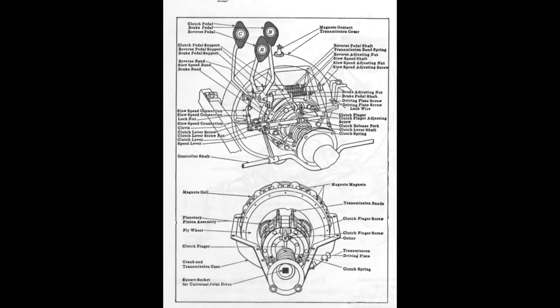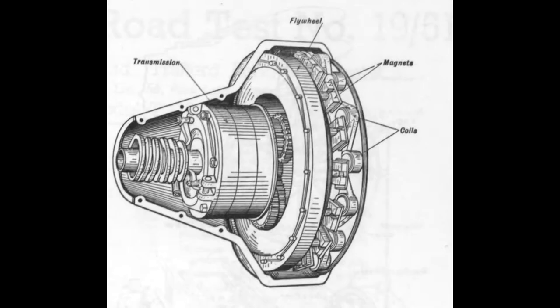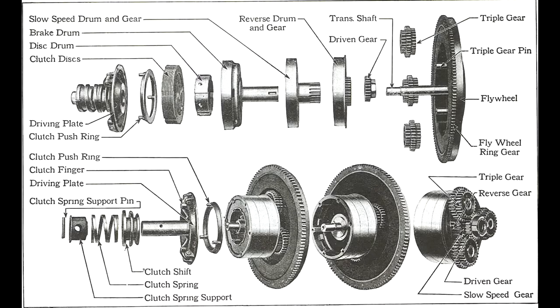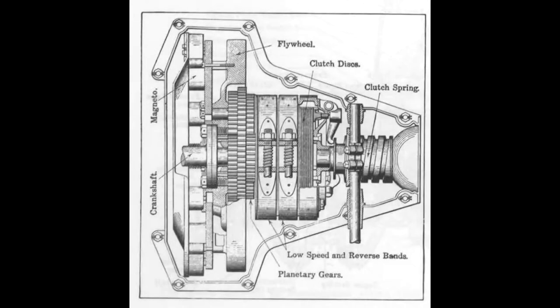The focus on simplicity was best exemplified by the car's transmission. The Model T used a system which avoided a bulky gearbox, often found in other cars with manual transmission. Instead, the transmission consisted of a simple, compact planetary gear assembly, which housed the gears for reverse and the two forward speeds. The gearbox transmitted power to the rear wheels via a wet clutch.